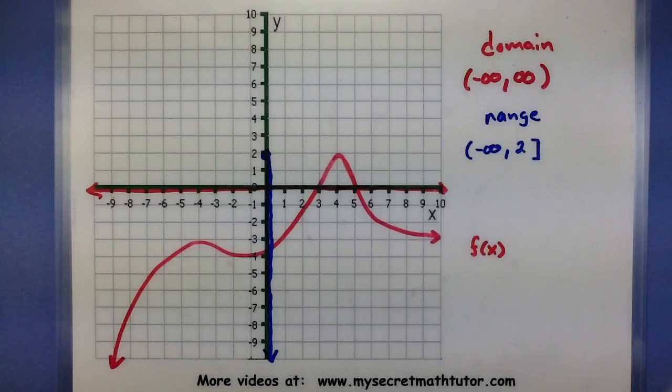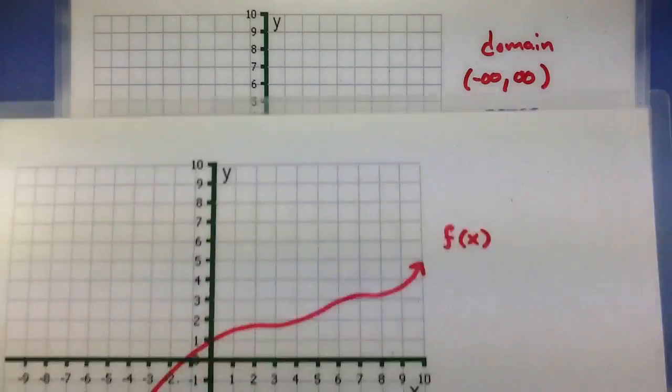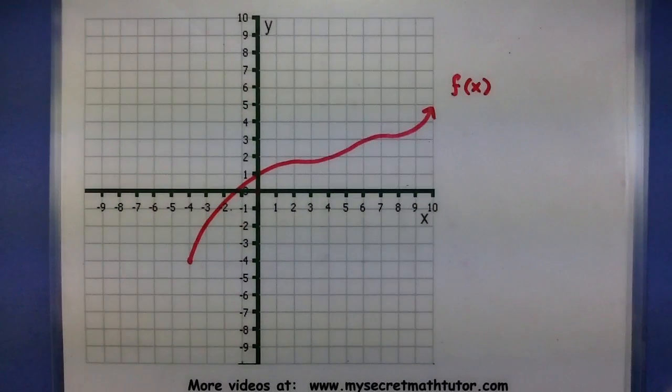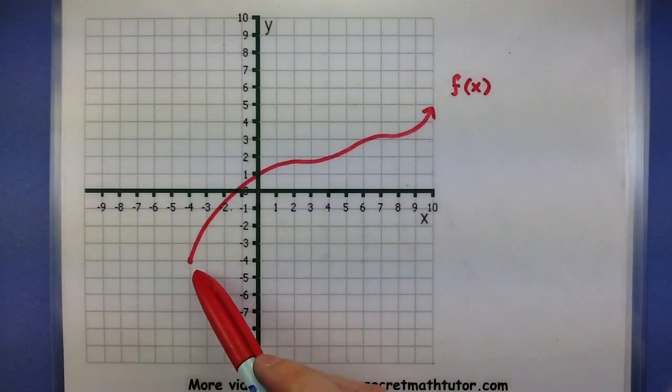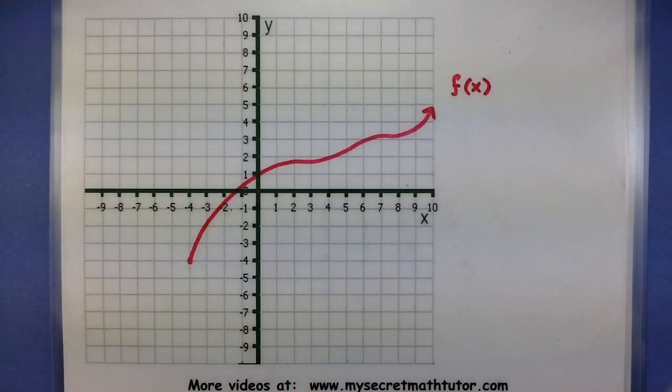Alright, let's look at one more. In this graph, I know that it does go on in this direction forever, but there's no arrow on this end so it actually stops.